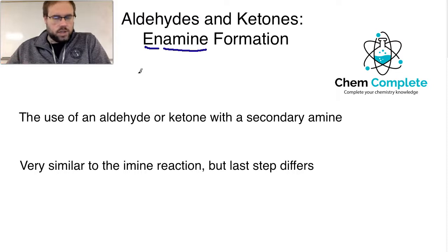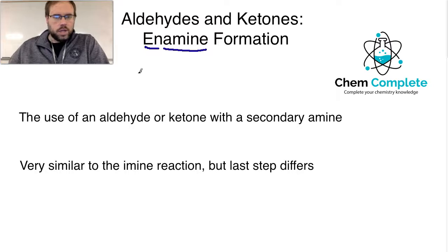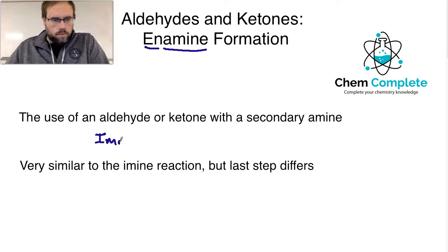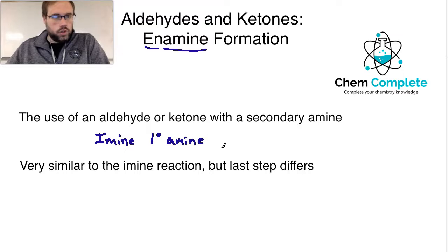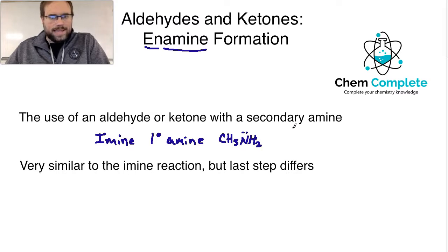As with all of the reactions in this subset of lectures, it's going to use an aldehyde or a ketone, and it's going to use a secondary amine. The imine formation we went over last time utilized a primary amine — that's an NH2 group, so something like CH3-NH2, which is a primary amine because it's only attached to one other carbon. A secondary amine results in the enamine formation, and that would be something like two CH3 groups with an NH.